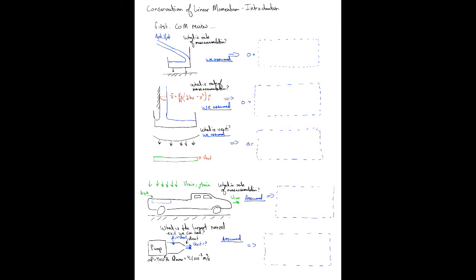We're going to go through every problem we've done, talk about what we assumed, what the question was, and what the final equation looked like that we ended up solving. So just a reminder, conservation of mass looks like this: zero is equal to d/dt of the integral over our control volume of rho dV, plus the integral over the control surface of rho w dot n-hat dA.